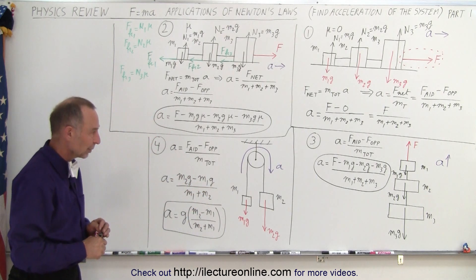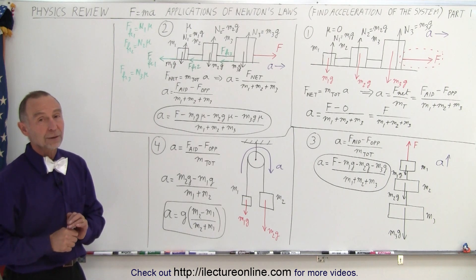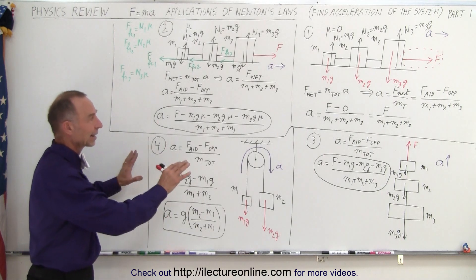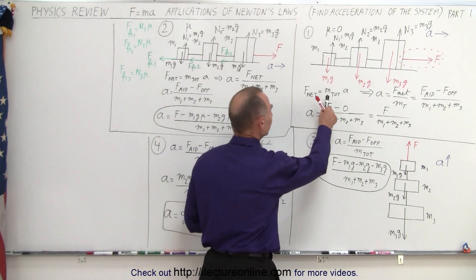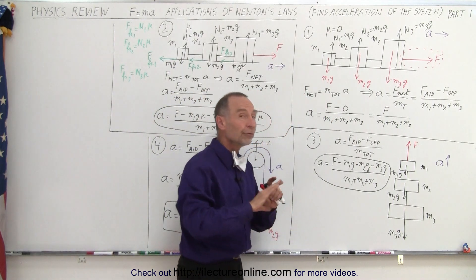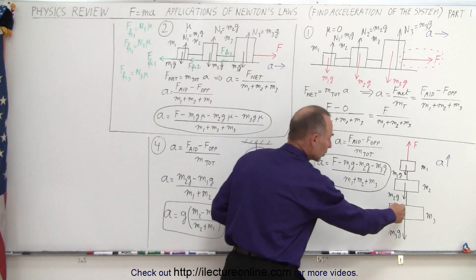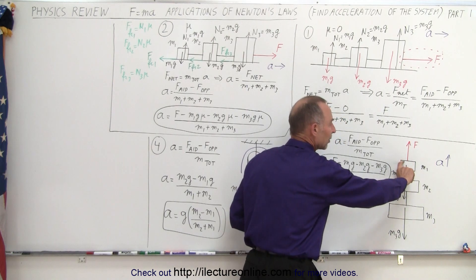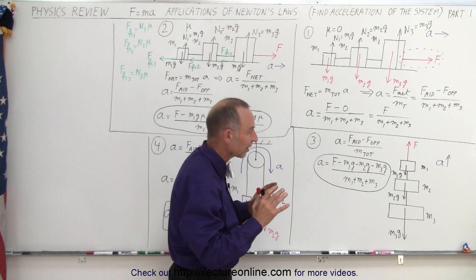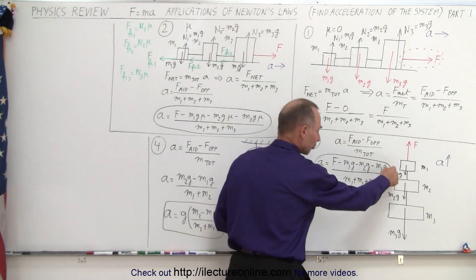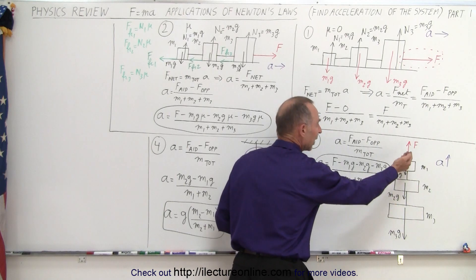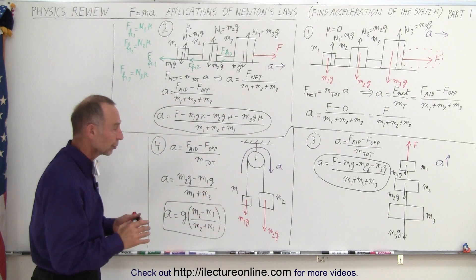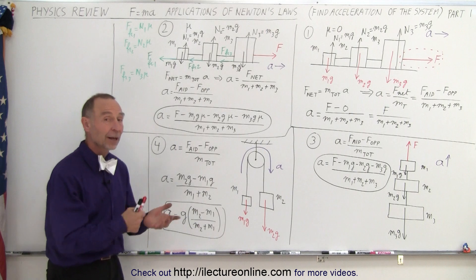Here are four simple examples, and we'll show additional examples that get more and more complicated. The approach will always be the same: F-net equals total mass times acceleration. All the internal forces are ignored — we ignore the tension inside the system because those do not add to the acceleration of the system; they just keep the system together. We only consider forces that act on the system from the outside, such as gravity and the applied force. Internal forces are ignored; only external forces are considered.